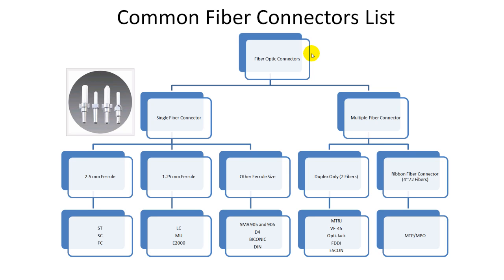Fiber connectors can be roughly categorized as single fiber connectors and multiple fiber connectors. Single fiber connectors hold only one fiber, while multiple fiber connectors can hold up to 2 to 72 fibers, as shown here and here. However, some single fiber connectors are also available in a duplex version, which can hold up to two fibers.